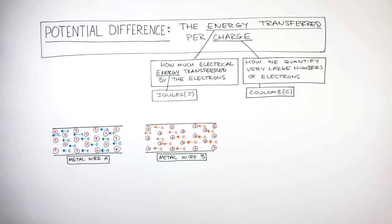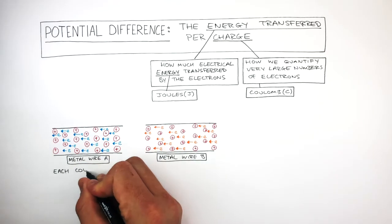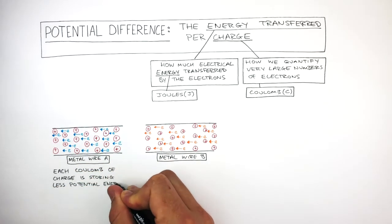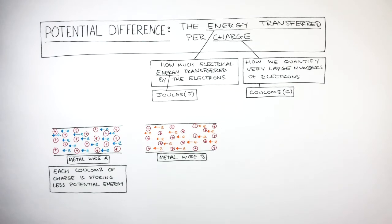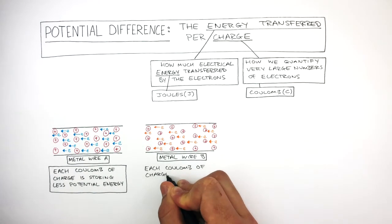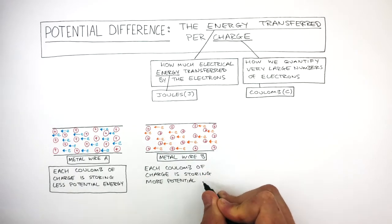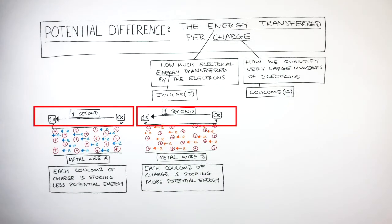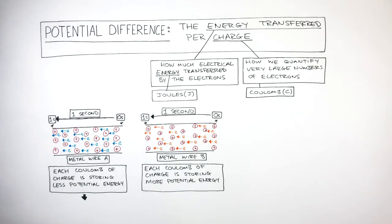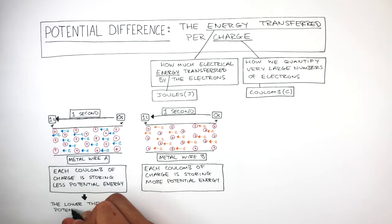Whereas the electrons in metal wire B are transferring more energy, represented by the electrons having an orange colour. So in metal wire A, each coulomb of charge is storing less potential energy. Whereas in metal wire B, each coulomb of charge is storing more potential energy. We can see in both metal wires it takes one second for the flow of charge to travel. So in metal wire A, because each coulomb of charge is storing less potential energy, this means overall the lower the potential difference.